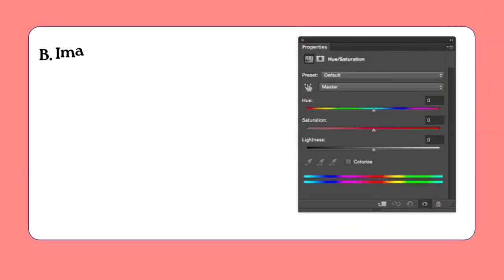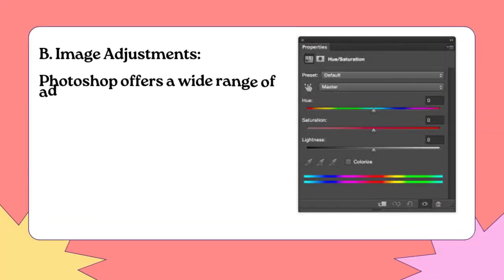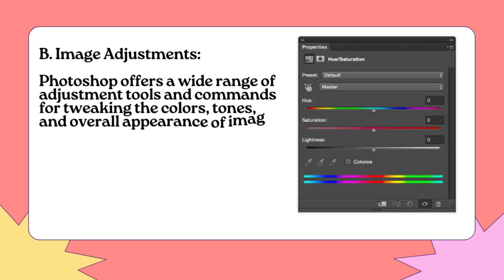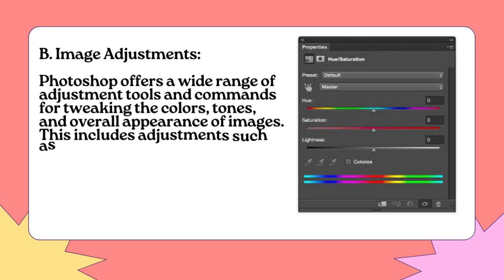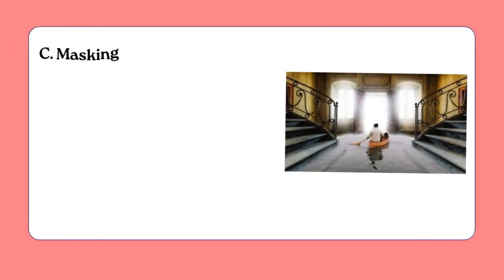B. Image Adjustments: Photoshop offers a wide range of adjustment tools and commands for tweaking the colors, tones, and overall appearance of images. This includes adjustments such as brightness/contrast, levels, curves, hue/saturation, and more.